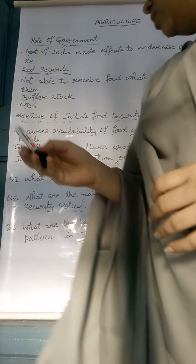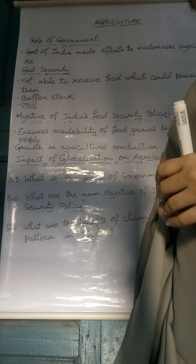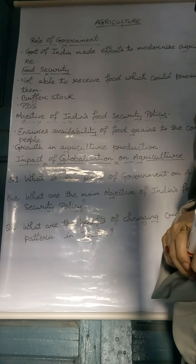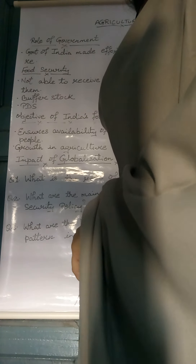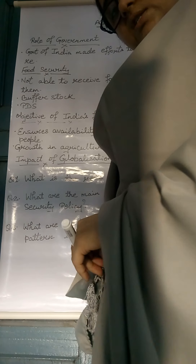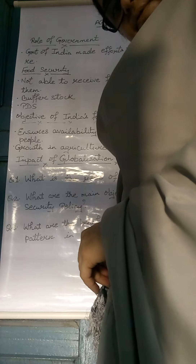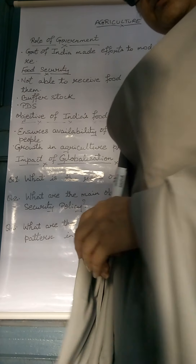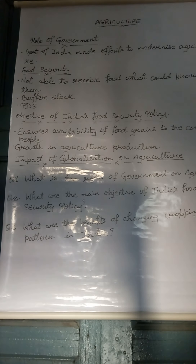Now you have to write all these questions in your fair copy: What is the role of government in agriculture? What are the main objectives of India's food security policy? What are the benefits of changing the cropping pattern in India?